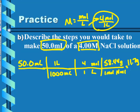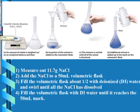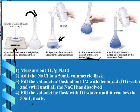The steps to make a solution involve four steps. First, measure out 11.7 grams of sodium chloride. Then add that sodium chloride to a 50 milliliter volumetric flask. Next, fill it about halfway with deionized (DI) water and swirl it until all the solute has dissolved. Once all the sodium chloride has dissolved, fill it the rest of the way until it reaches the 50 milliliter mark.